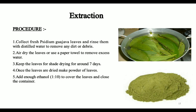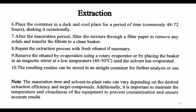The extraction procedure: first, collect the Psidium guajava leaves and wash them in distilled water. Air dry the leaves or use a paper towel to remove excess water. Keep the leaves for shade drying for 7 days. Once the leaves are dried, make a powder. Add ethanol to cover the leaves and close the container — use ethanol in a 1:10 ratio, meaning 1 gram of powder requires 10 ml of ethanol. Place the container in a dark, cool place for 48 to 72 hours. After the maceration period, filter the mixture through filter paper to remove solids and transfer to a clean beaker. Repeat with fresh ethanol if necessary. Remove ethanol by evaporation using a rotary evaporator or a magnetic stirrer at low temperature until the solvent has evaporated. The resulting residue can be stored in an airtight container for further use.